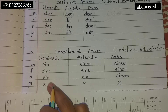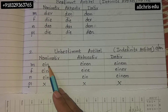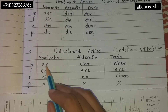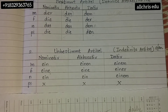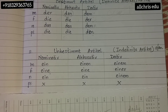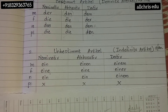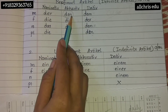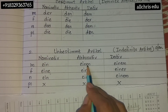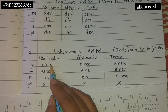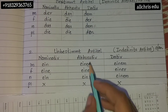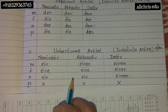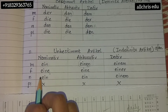Listen to the pronunciation carefully — all words in the nominative column have the same spelling 'ein.' In the accusative column, it is exactly similar to nominative — only 'r' changes to 'n,' and since we can't write 'nn,' we write 'en.' So only that much change is there; these two columns look exactly the same.